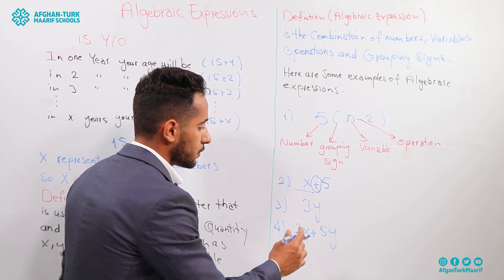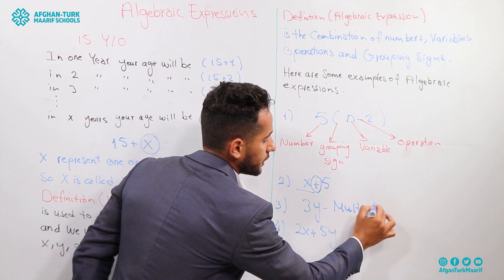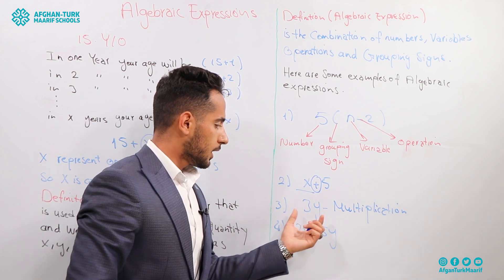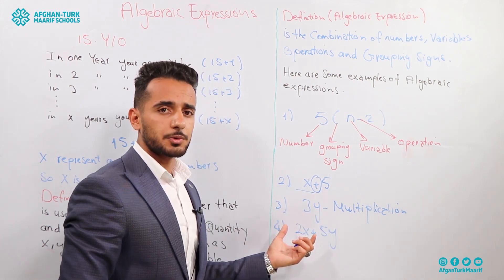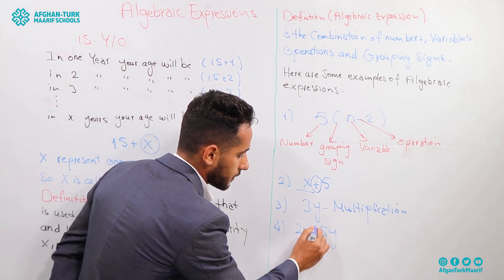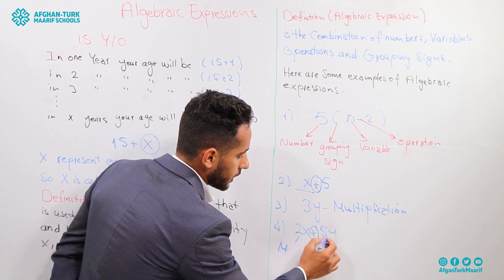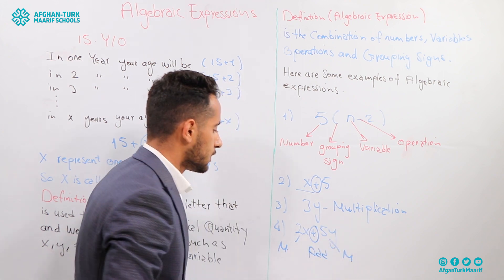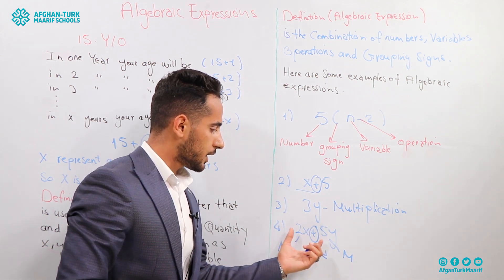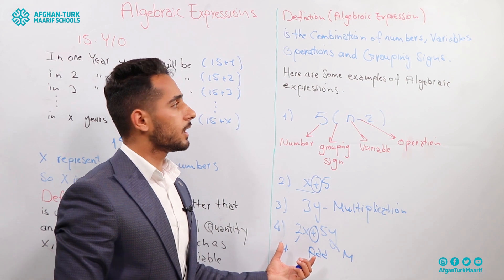Third example: 3 times Y. The operation between 3 and Y is multiplication, so we have a number and a variable — it's an algebraic expression. Another example: 2X plus 5Y. We have two operations — addition between the terms, and multiplication between 2 and X, and between 5 and Y. We have two numbers and two variables, so the combination of these 4 parts is called an algebraic expression.